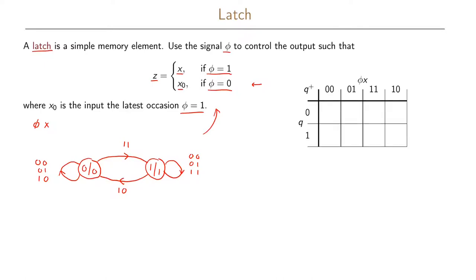Now let us write the Karnaugh map for this state transition graph. We have already done our state assignment: the first state is called zero and the second state is called one. In the Karnaugh map we use the state q for the rows and the two inputs phi and x for the columns. Since we have a Moore graph, we only need a function for the next state, because the output depends only on the state, so we don't need a separate Karnaugh map for the output function.